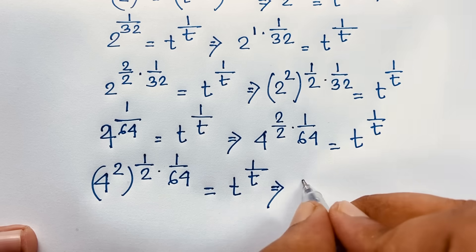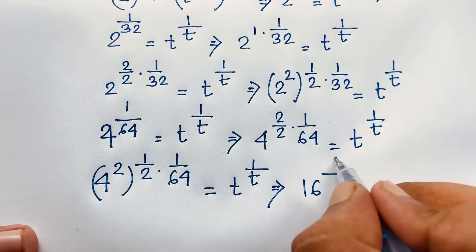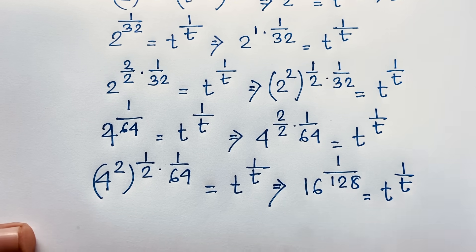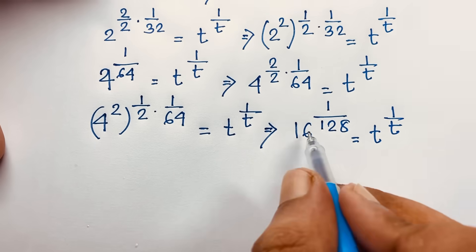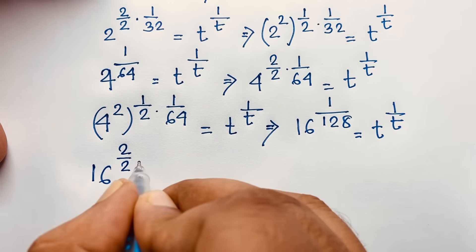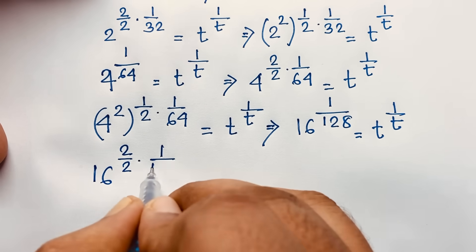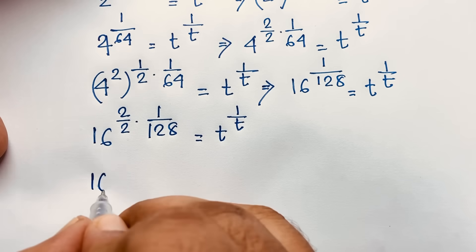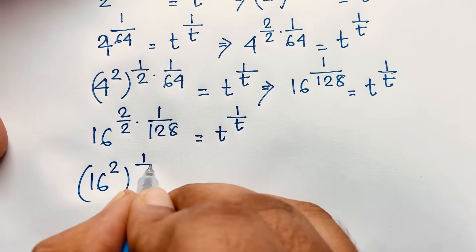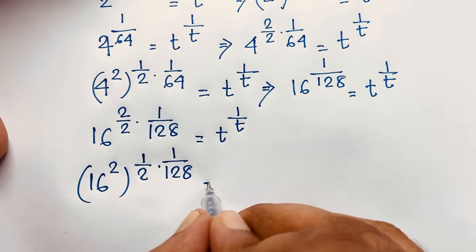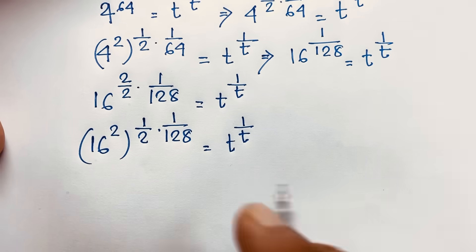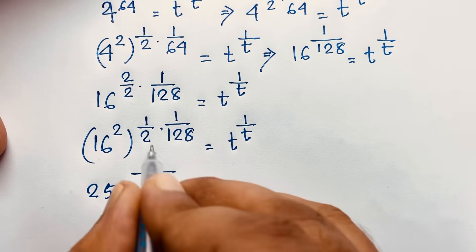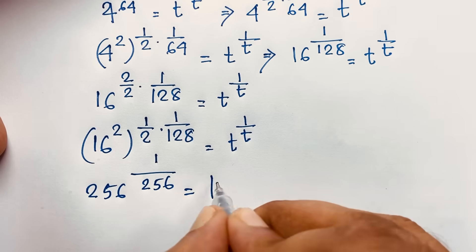Next: 4 to the power 2 is 16, and the exponent is 1 over (2 times 64) = 1 over 128. So 16 to the power 1 over 128 equals t to the power 1 over t. Taking the same approach again: 16 to the power 2 is 256, and the exponent becomes 1 over (2 times 128) = 1 over 256. So 256 to the power 1 over 256 equals t to the power 1 over t.